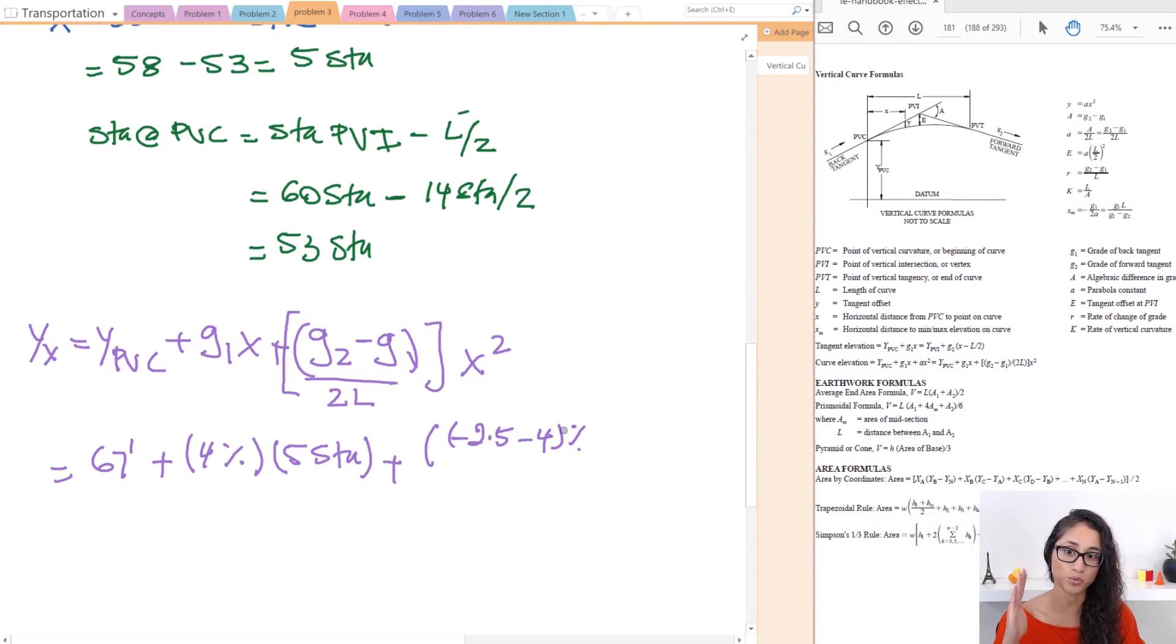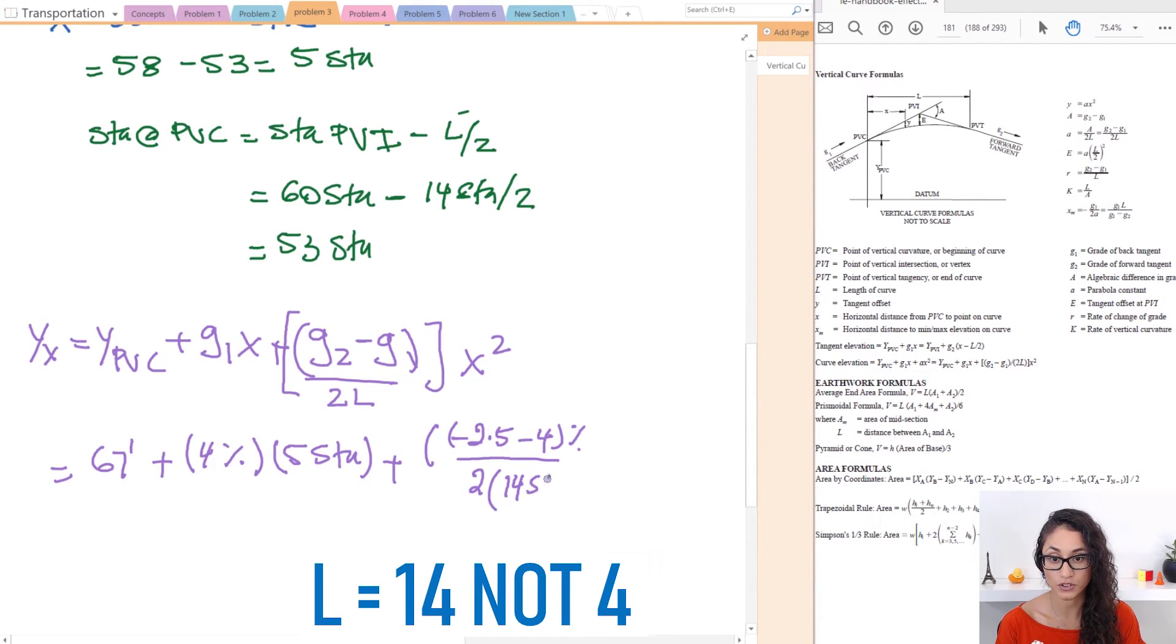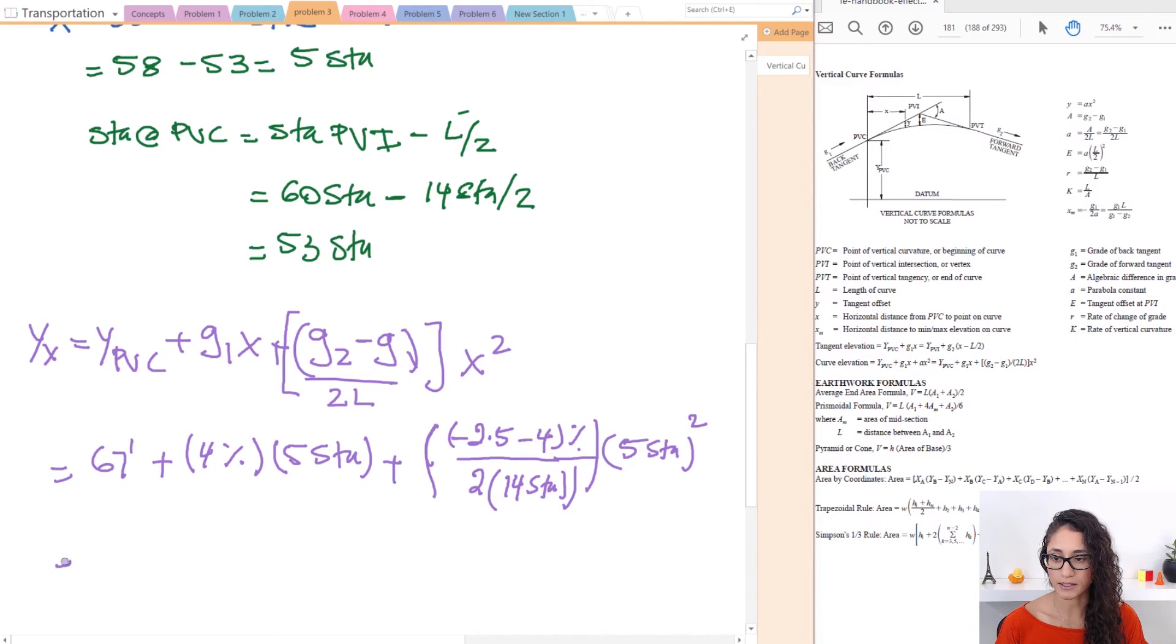Here G1 was going upwards so it's positive but we have a negative here so it's going to be minus. Now this term is divided by 2 times L in station which is 14 station because I use percentage here. Now this whole term is multiplied by X squared which is 5 station squared. Now if you plug in this you should get an answer of 81.2. So that is your elevation.